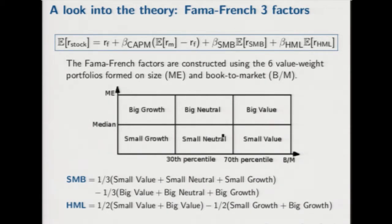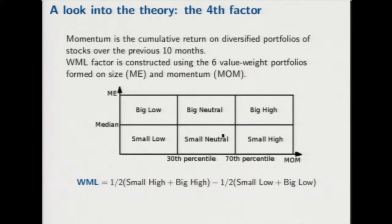One can also consider a factor based on momentum. Momentum is given by the cumulative return of stock portfolios over the previous ten months. As with the previous factors, six value-weighted portfolios are formed on size and momentum, and the Winners Minus Losers factor is defined as the average return of portfolios with high momentum minus the average return of portfolios with low momentum.